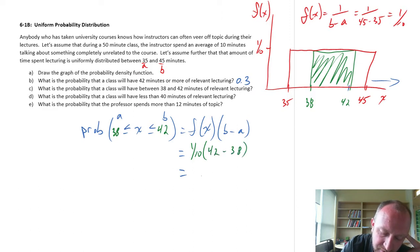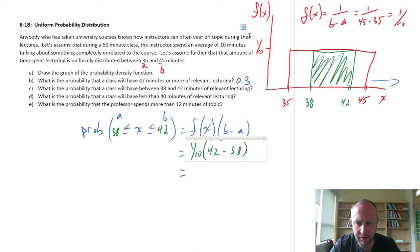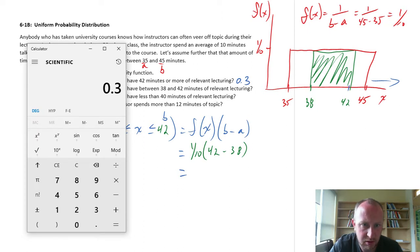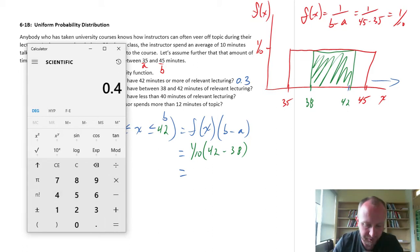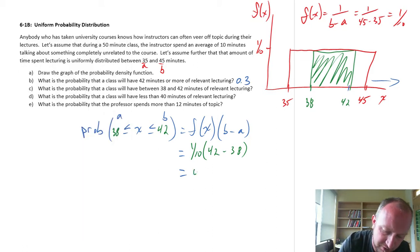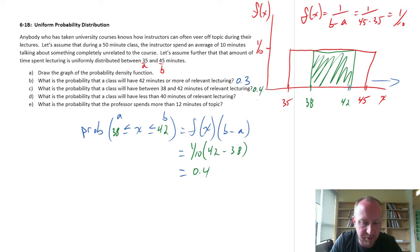So this is 1 tenth times, now we have here 38 to 42. So this is 42 minus 38. So that's 1 tenth times 4. So that's 0.1 times 4, 0.4. Easy enough, 0.4. 40% chance that it will be between 38 and 42 minutes of relevant lecturing.